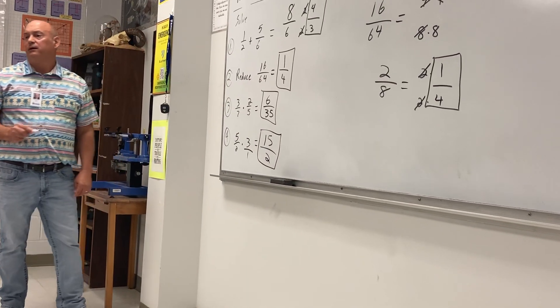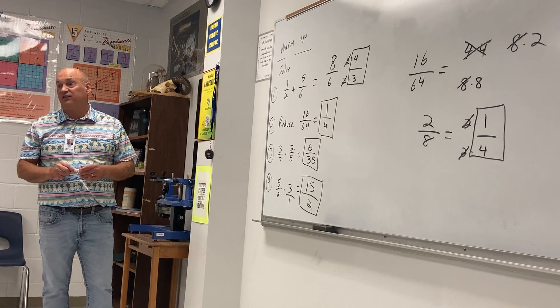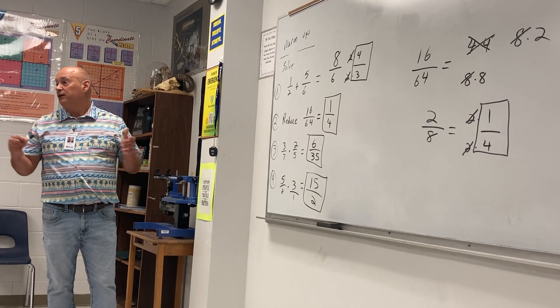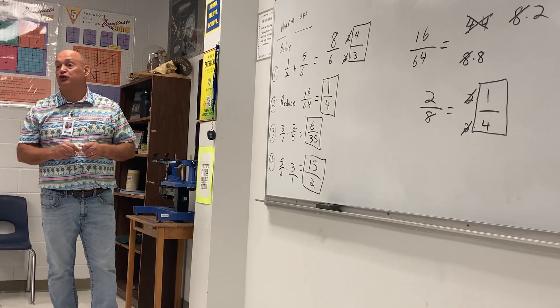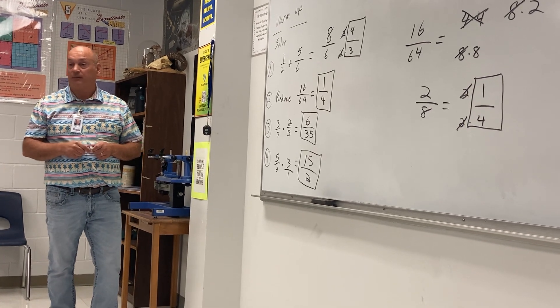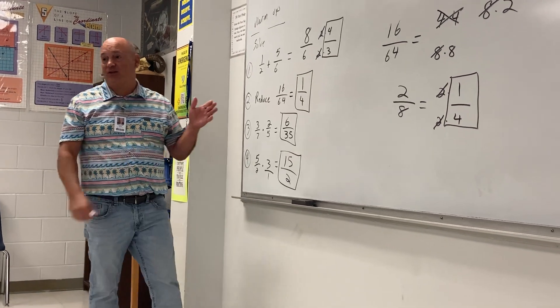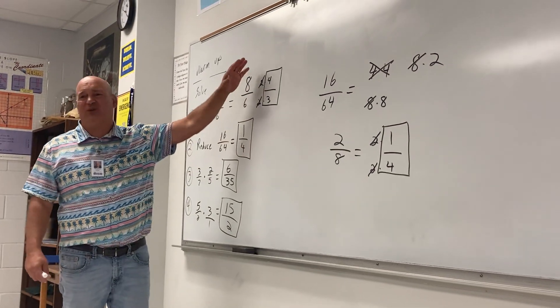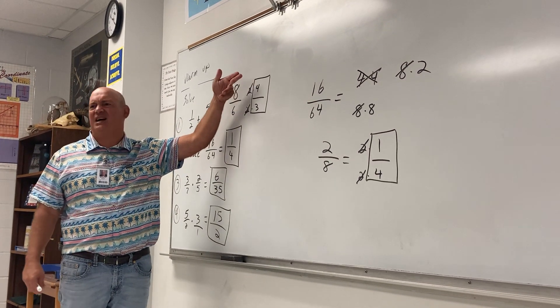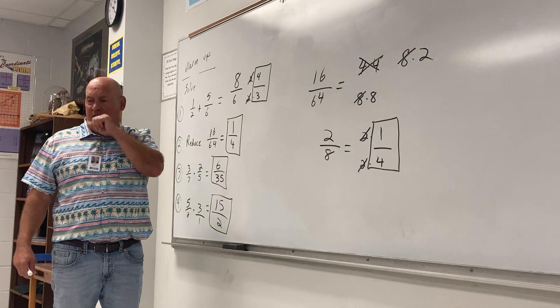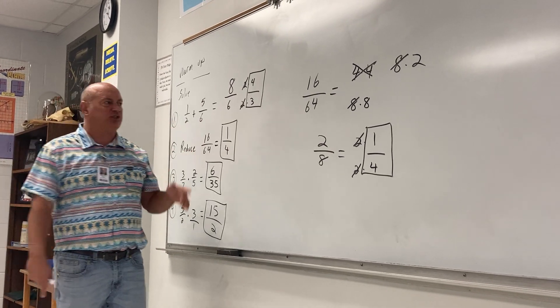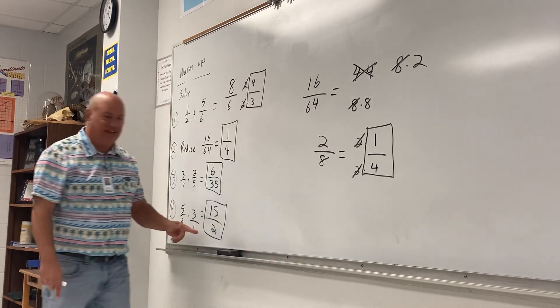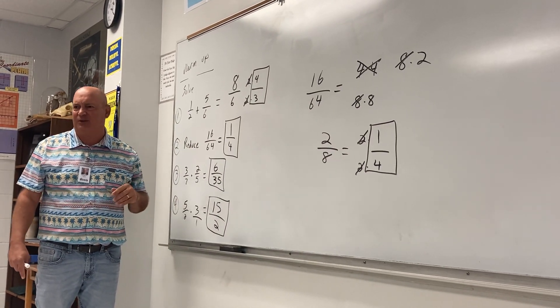You no longer have to convert that to seven and a half. You are now allowed to leave it improper as 15 over two. Are you with me? Now that we're getting close to high school level math, in high school we could care less that the number on top is bigger than the bottom. Fifth grade, they cared a lot about that. And they made you change it to one and one third, seven and one half. Are you with me? We don't care about that anymore.